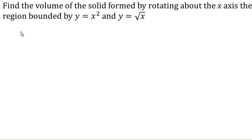Okay, we want to find the volume of the solid formed by rotating around the x-axis, the region formed by y equals x squared and y equals square root of x, which you might notice intersect when x equals 0 and when x equals 1. So we're talking about this tiny little region here.